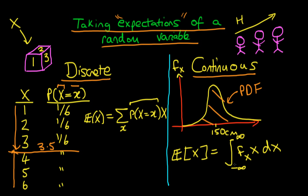What does it mean to integrate from minus infinity to plus infinity? In this particular example we wouldn't need to do that, because there are scarcely any people over 300 centimeters in height and definitely no one below 0 centimeters, so our integral goes from 0 to 300. If we do the integral correctly, the value we get on average — taking infinitely many people from the population and averaging their heights — should be 150 centimeters.